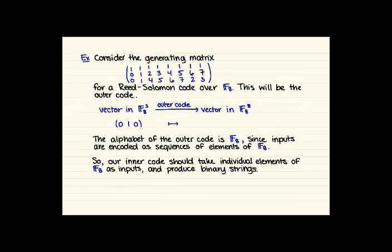So this is a lot easier to see by looking at a specific example, so we're going to do that. Consider the generating matrix for a Reed-Solomon code over F8. Remember this is obtained by looking at that Vandermonde matrix.